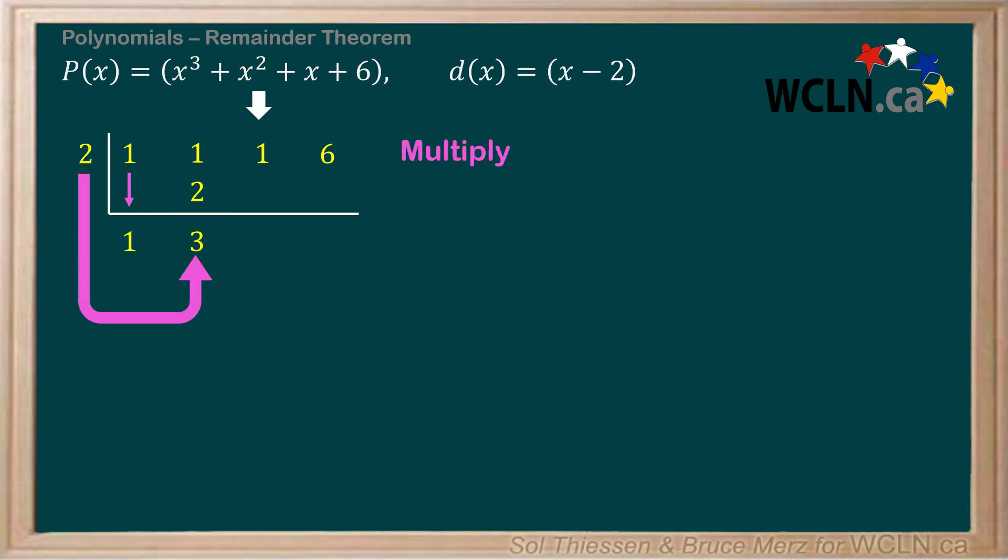2 times 3 is 6, and 1 plus 6 is 7. 2 times 7 is 14, and 6 plus 14 is 20.